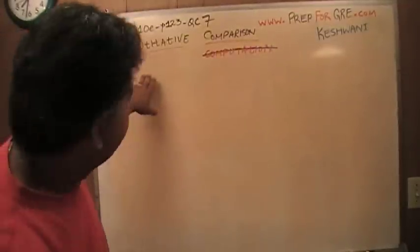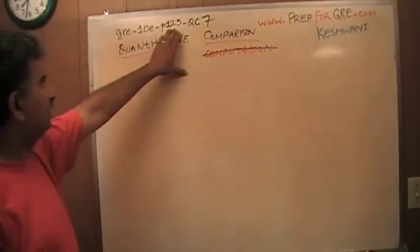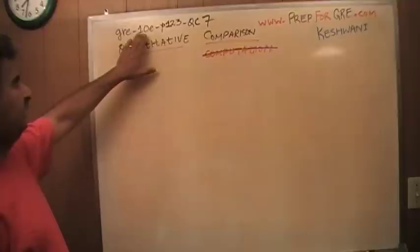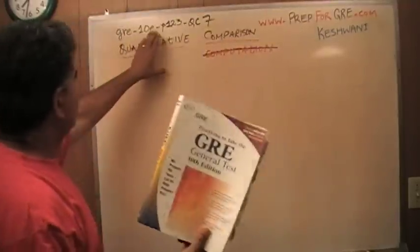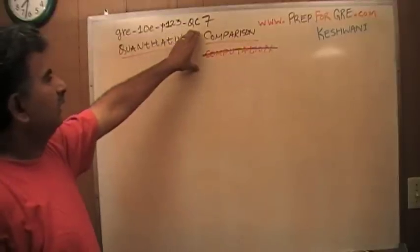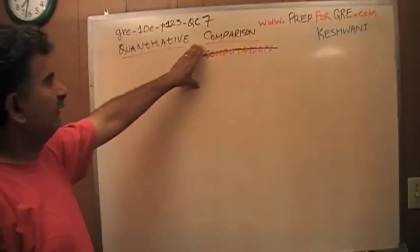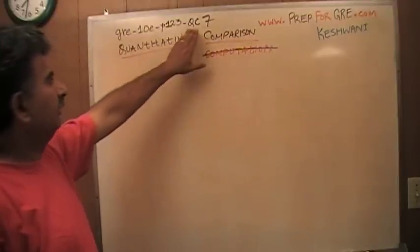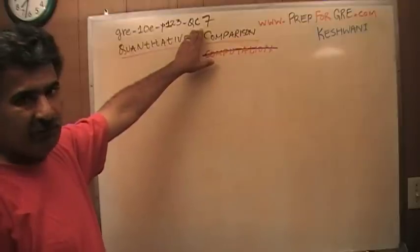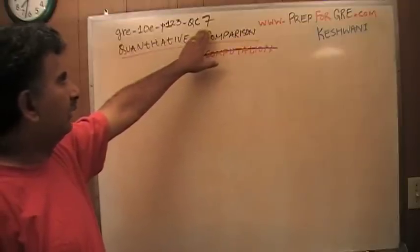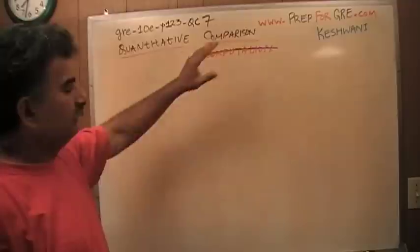The problem that I'm about to solve is the one that you will find on page number 123. This is a tag, GRE-10E for the 10th edition of the book. Page 123, QC stands for Quantitative Comparison because those are the questions I'm doing right now. Down the road, when I do multiple choice questions, it will say MC for multiple choice questions, but that will come later. QC, number seven.